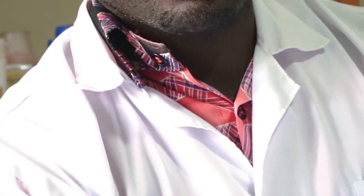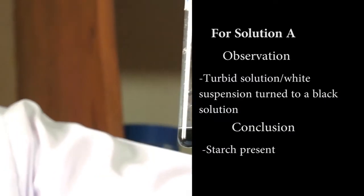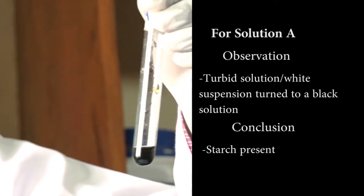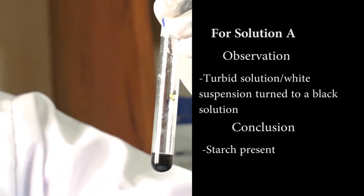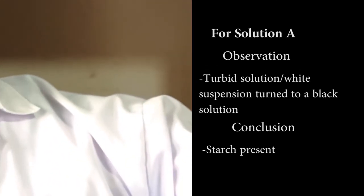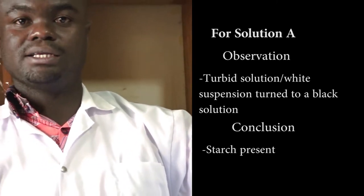We have our final color and you can see it is black. So in our observation we are going to say the turbid solution turned into a black solution. And in our conclusion we are going to say starch present.